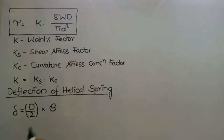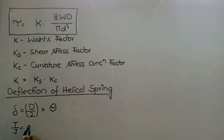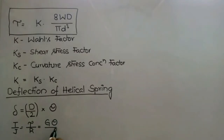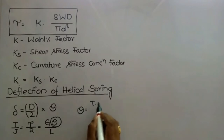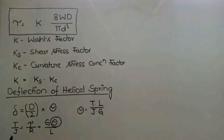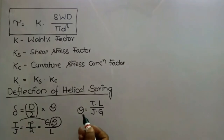The angular deflection theta can be found from the torsion equation: T/J = τ/r = Gθ/L. From this equation, taking the components T/J = Gθ/L, you can write the equation for theta. Here, theta is the angular deflection.